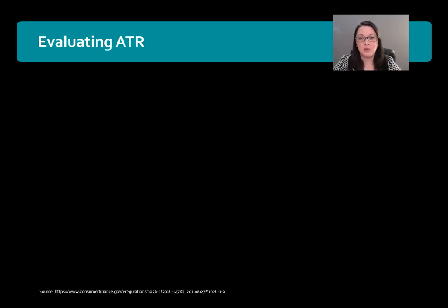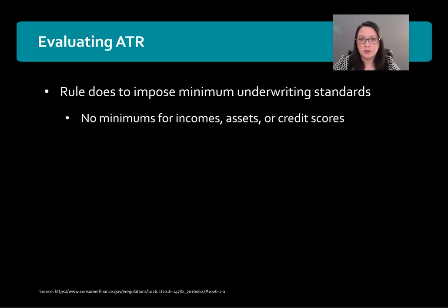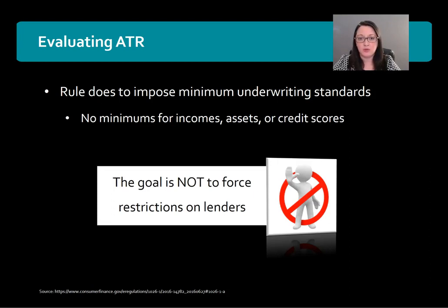How does an underwriter or lender evaluate that a borrower has the ability to repay? The point of this is not to impose minimum underwriting standards upon the lender. There's no minimum set by the ATR rule for borrower income, assets, or credit scores. The goal of the ATR rule is not to force restrictions on lenders — instead, it is to ensure that all lenders are using the same benchmark standards that are fair and responsible to determine the borrower's ability to repay.